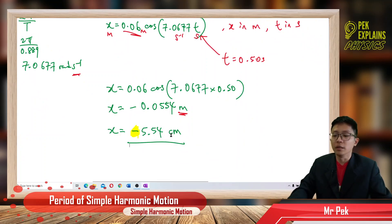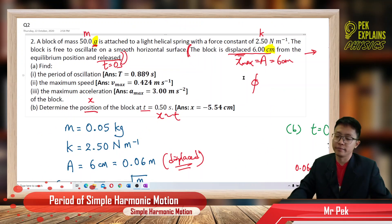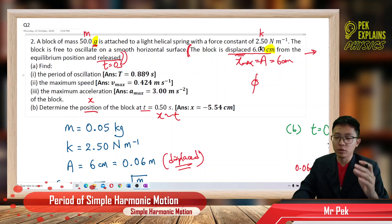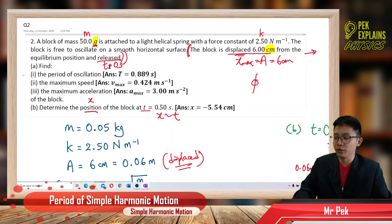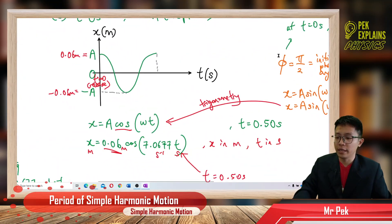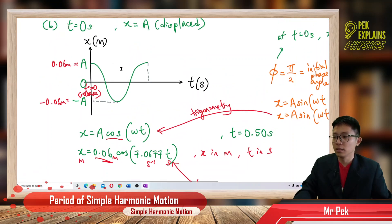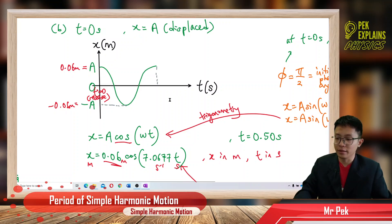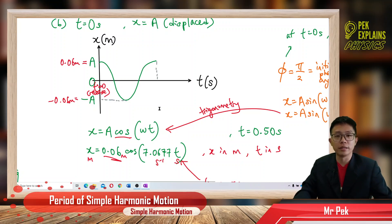In summary: how much you displace is how much your amplitude — the amplitude cannot exceed the displacement you applied. Also, if you release from the amplitude and time starts from the amplitude, your equation is a cosine equation, because the graph starts from the amplitude at t = 0. That's all for this question.